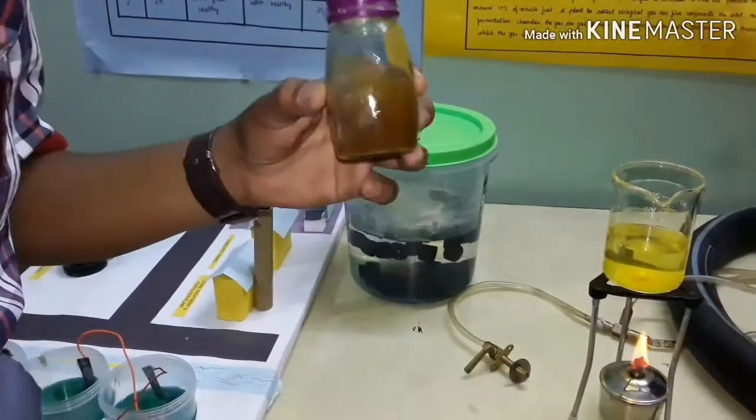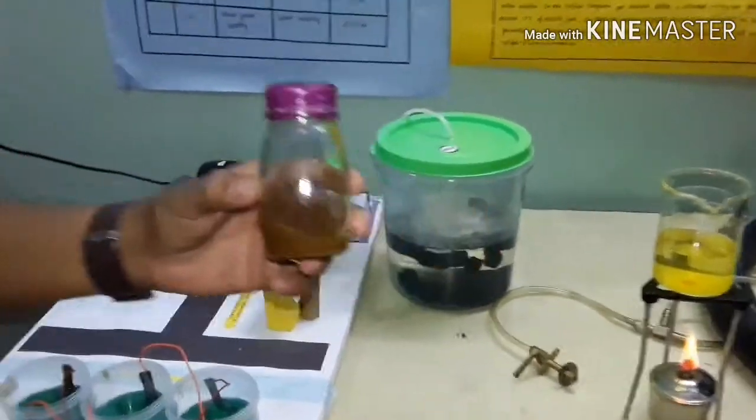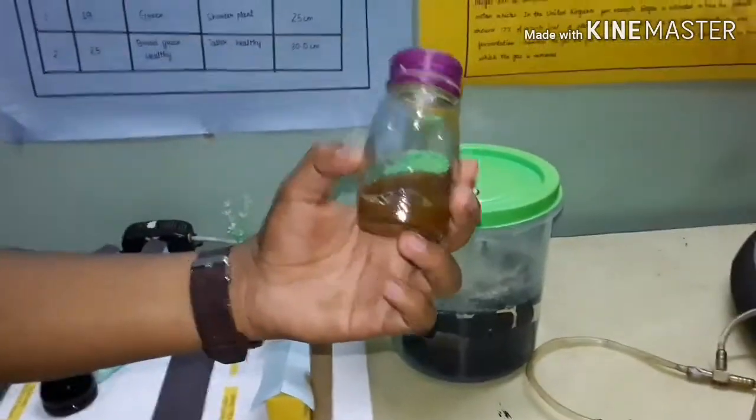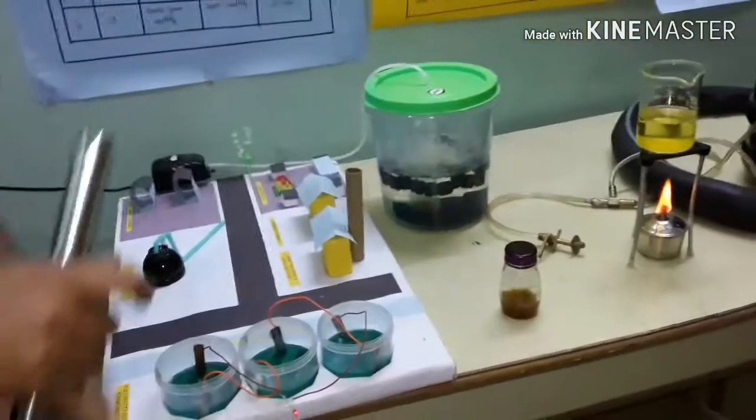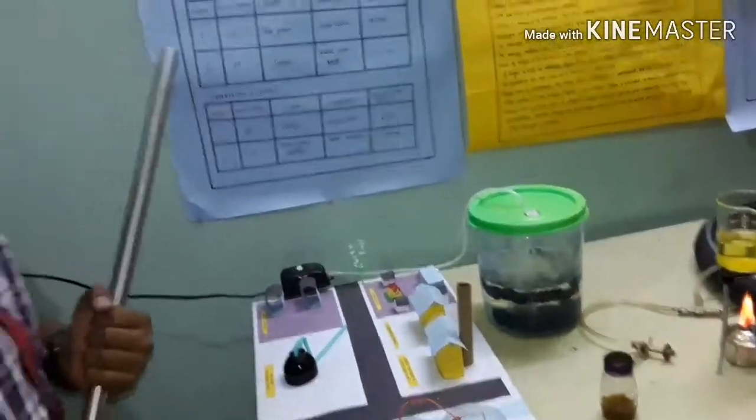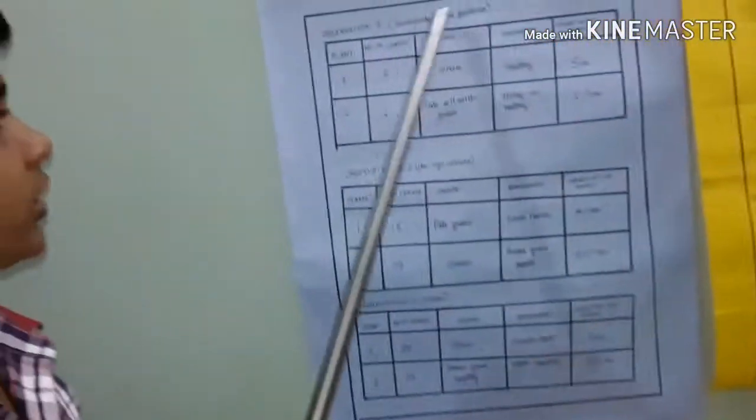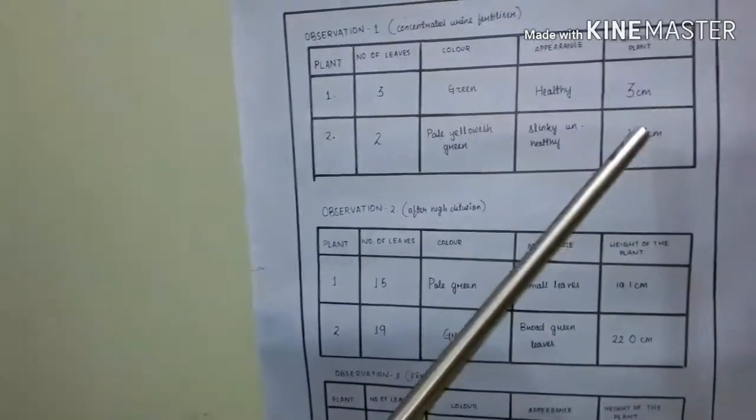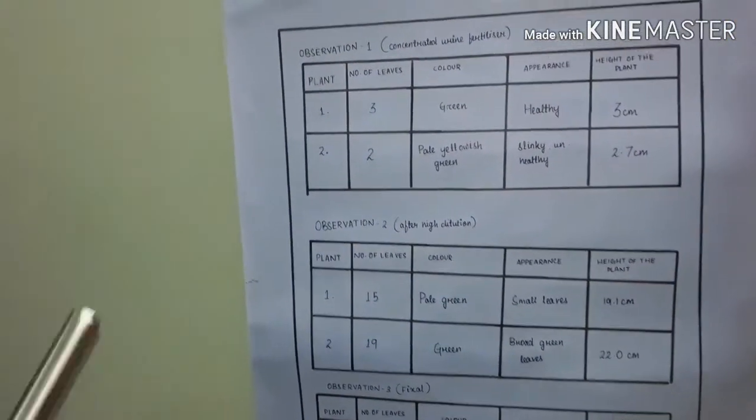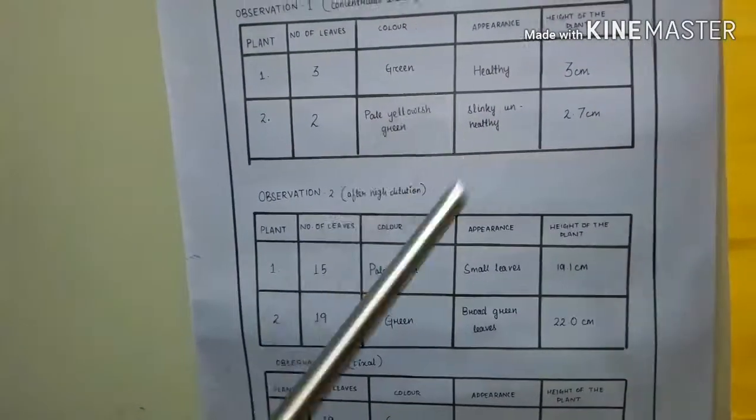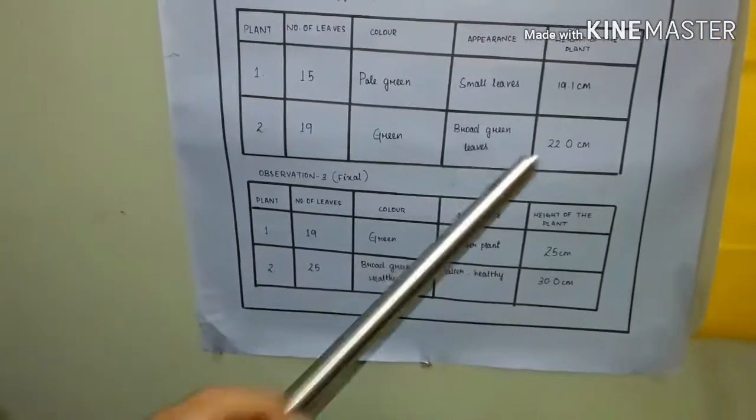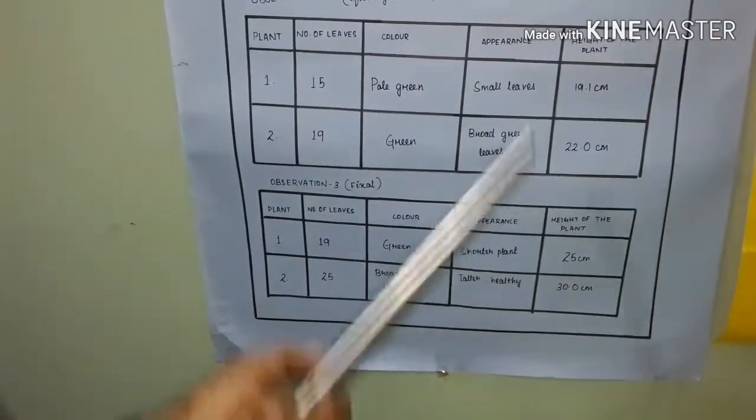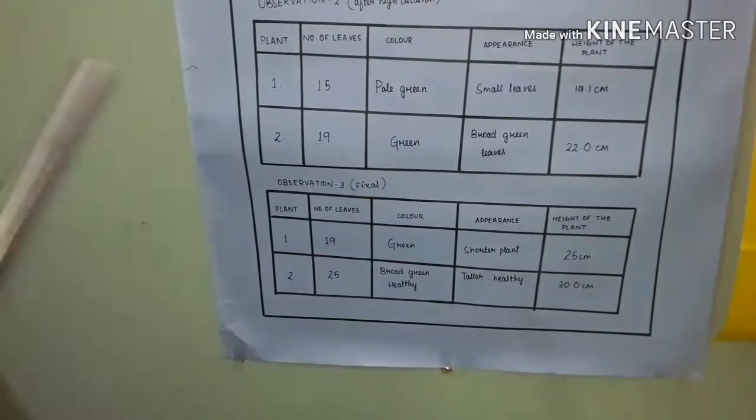This is relatively very much cheap than the fertilizer we have in the shops. We tested our experiment in our home garden. We found that in the concentrated urine without treatment, it grew about 2.7 to 3 cm within 4 days. After its high concentration, we found that the plant grows around 19.1 cm to 22 cm within 1 week.